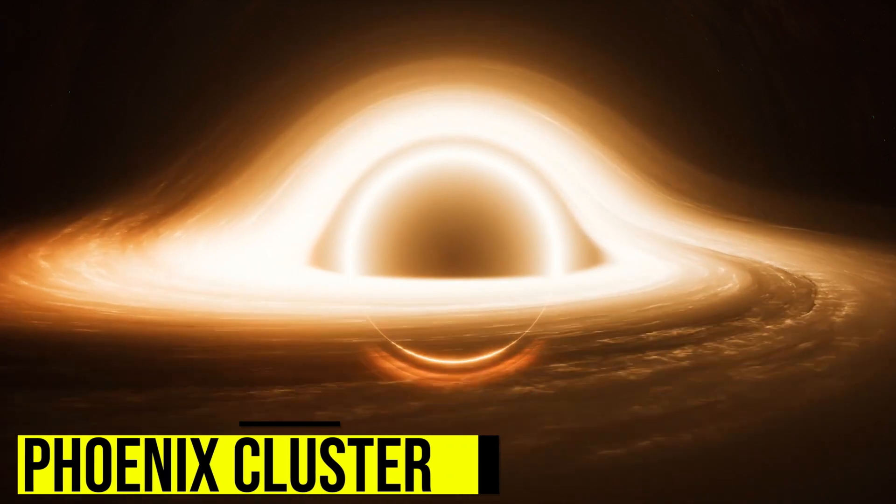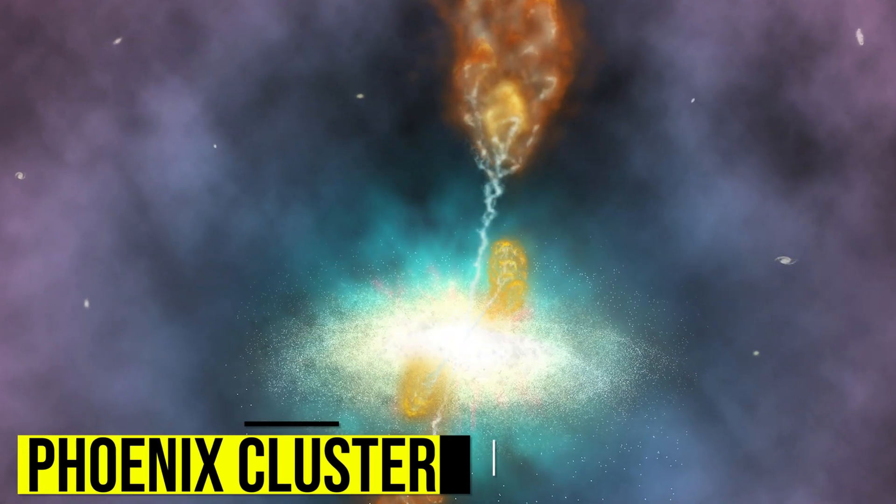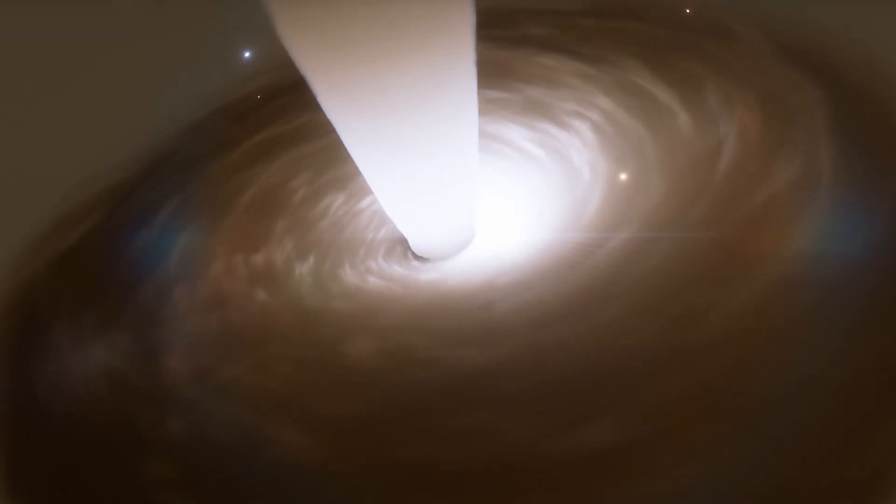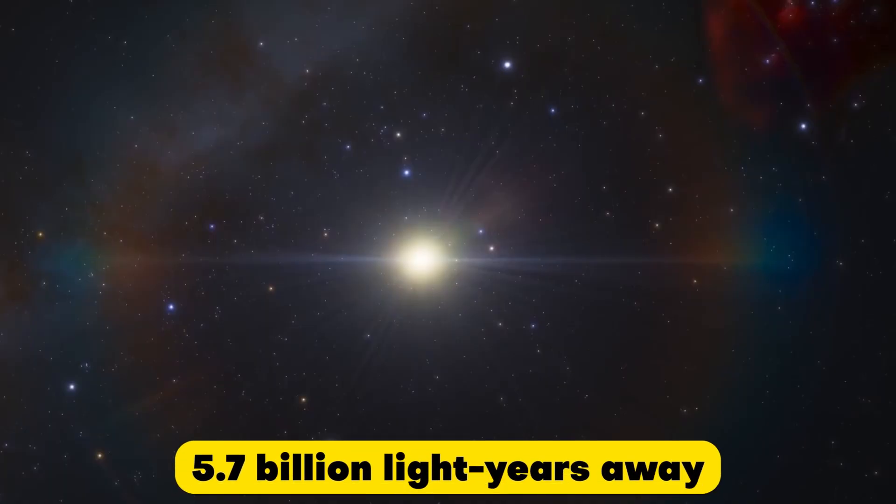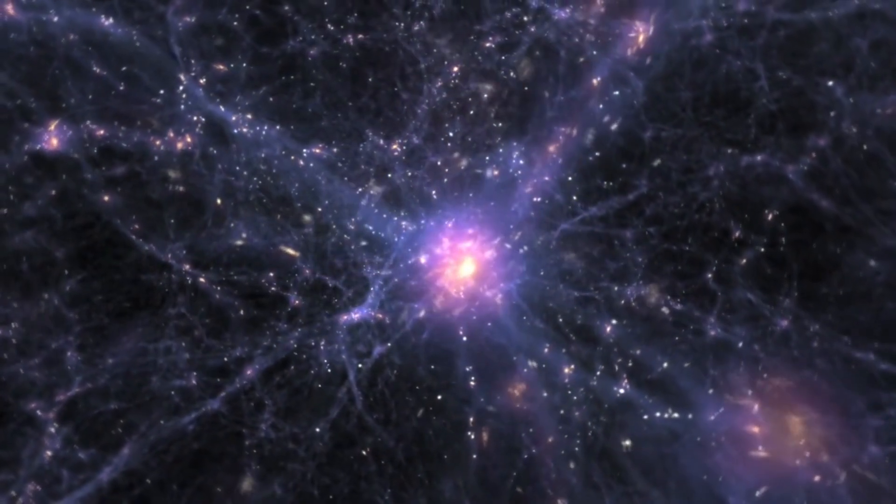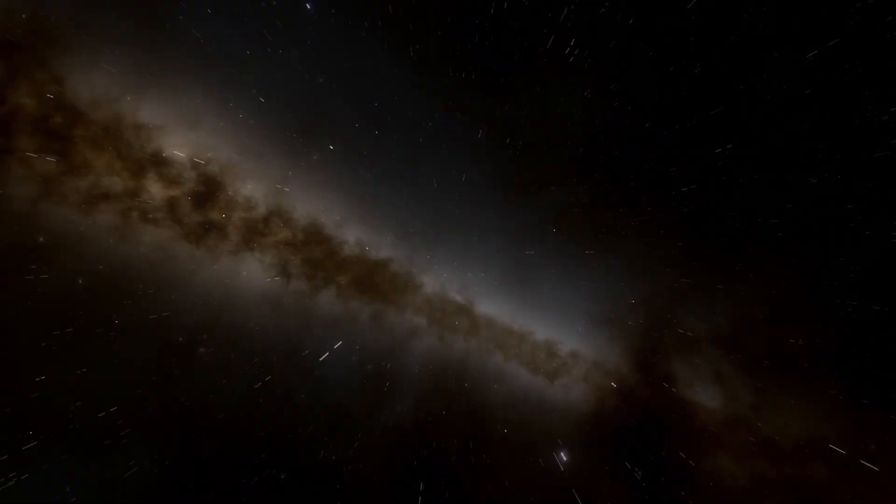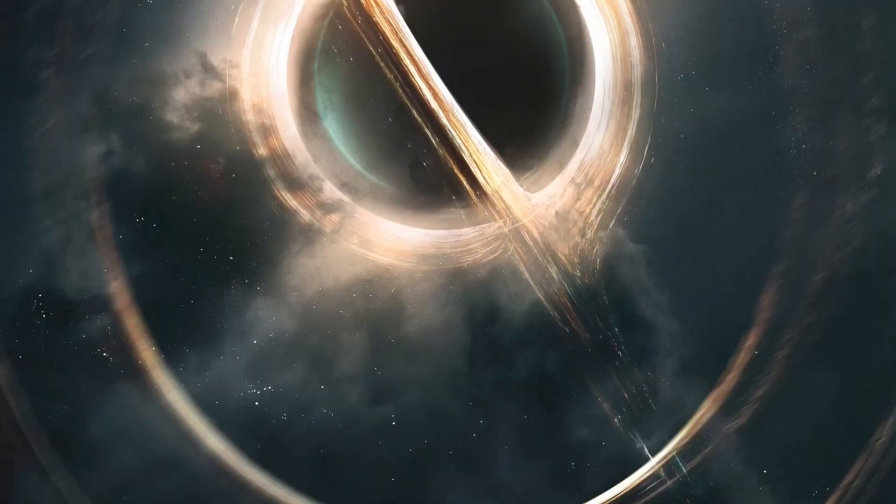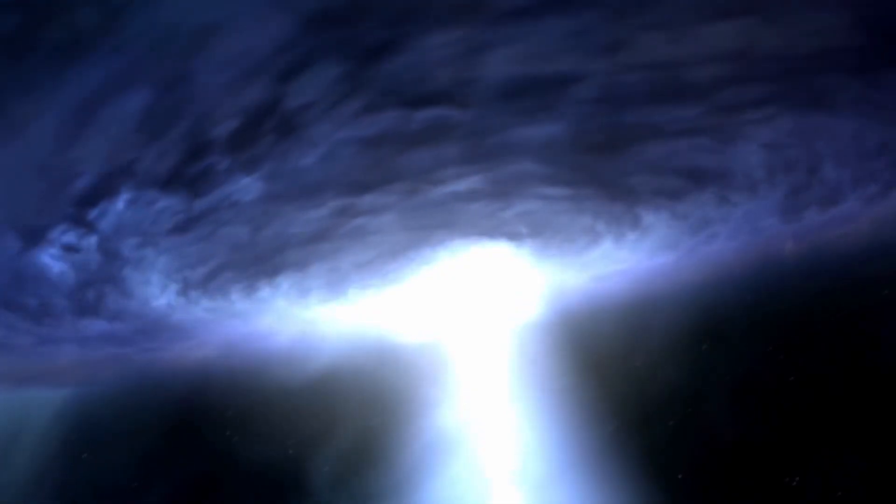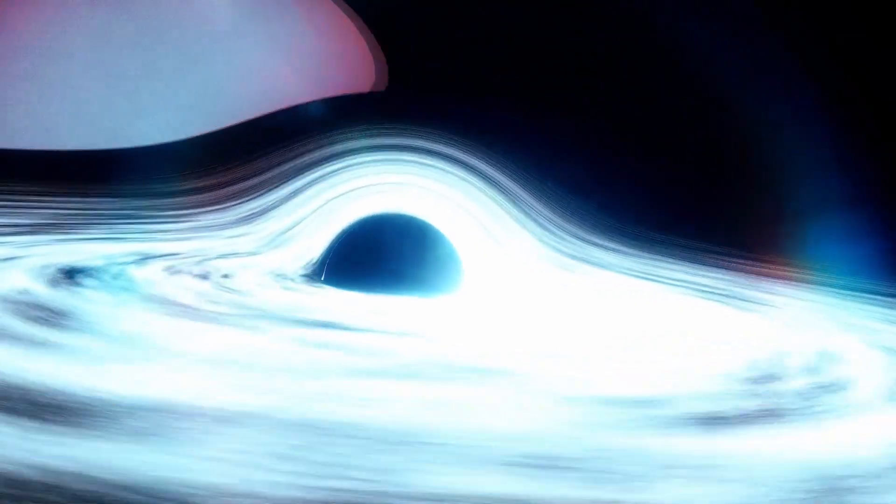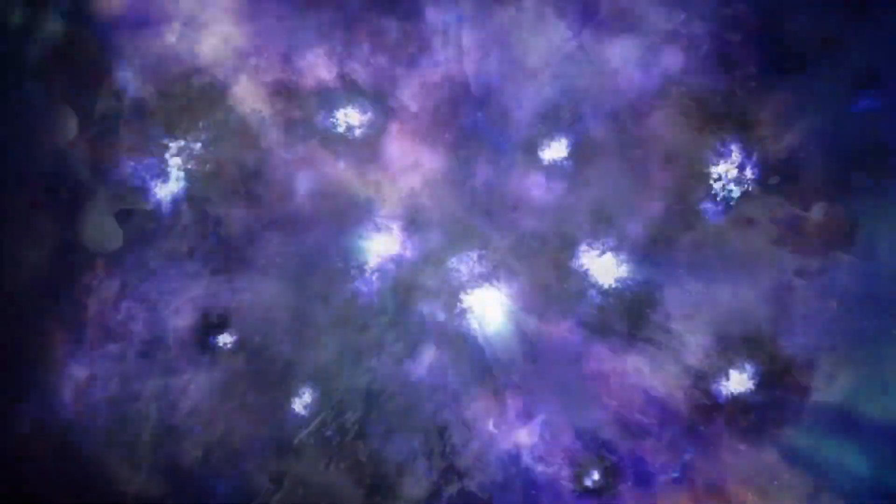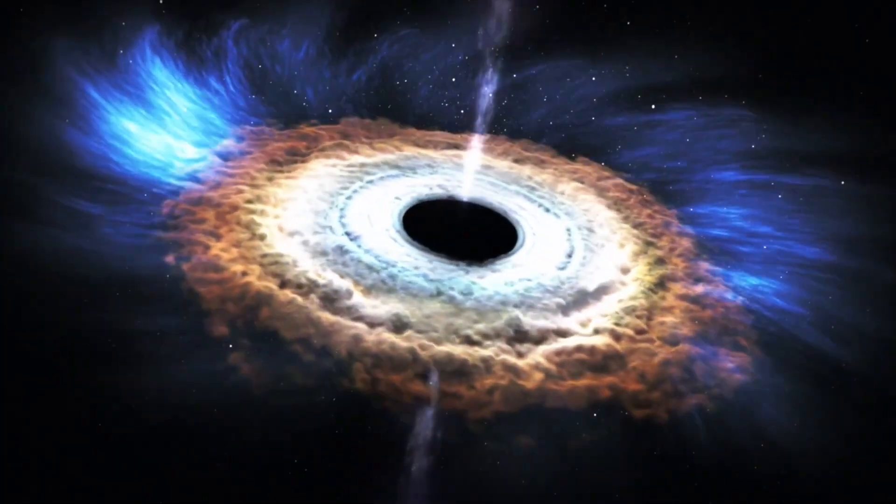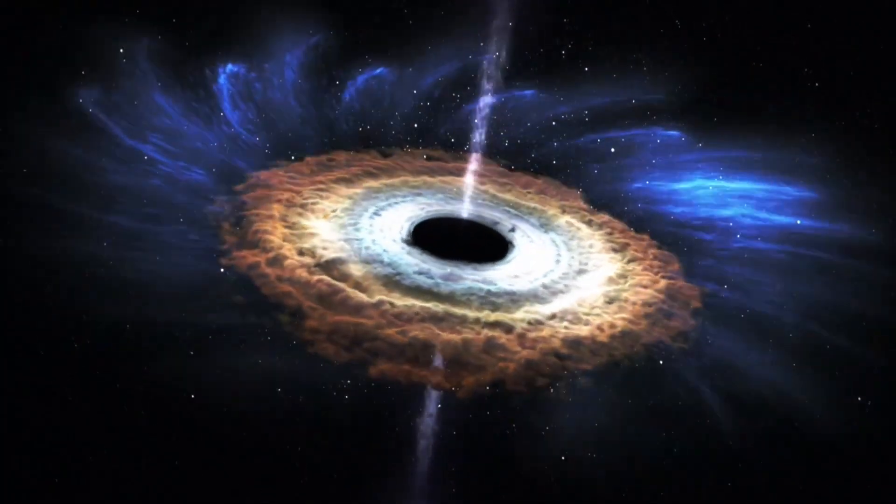Phoenix Cluster is one of the most unusual galaxies ever discovered. It is a massive galaxy cluster located approximately 5.7 billion light-years away in the constellation Phoenix. Phoenix Cluster is composed of several hundred galaxies that are bound together by gravity. What makes the Phoenix Cluster so unusual is the presence of a massive black hole at its center. The black hole has a mass of approximately 20 billion times that of the Sun, making it one of the most massive black holes ever discovered.